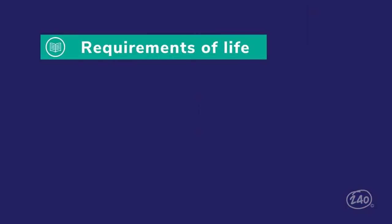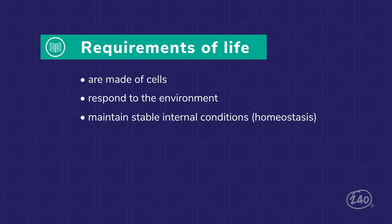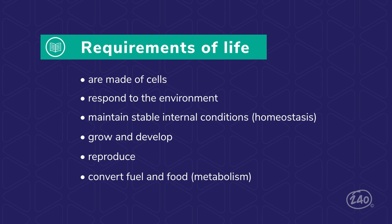You need to be able to tell if something is alive, so you'll need to know the requirements of life. If something is alive, it is made of cells, responds to stimuli from the environment, maintains homeostasis, grows and develops, reproduces, and has a metabolism. If it doesn't meet all of these criteria, it is not alive.